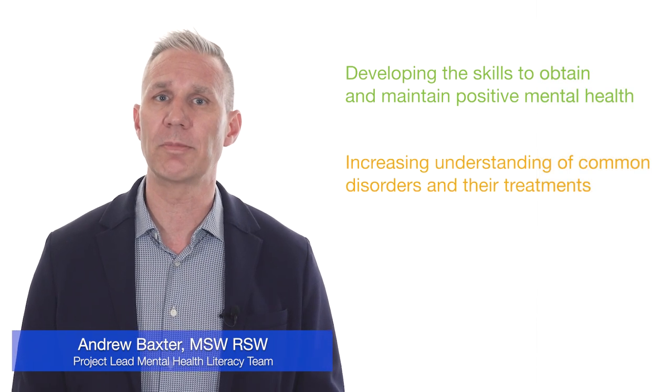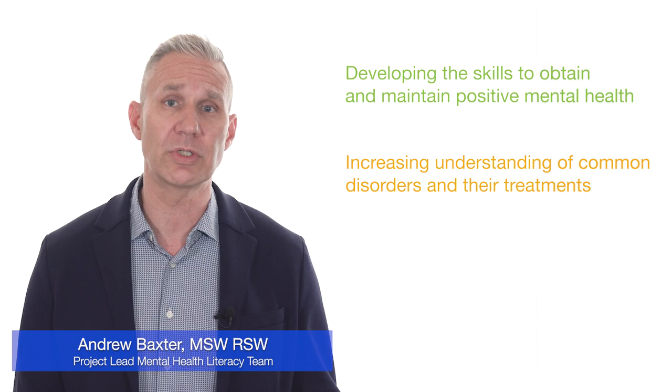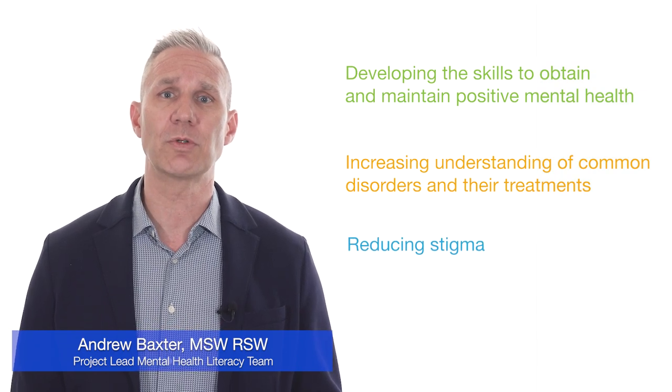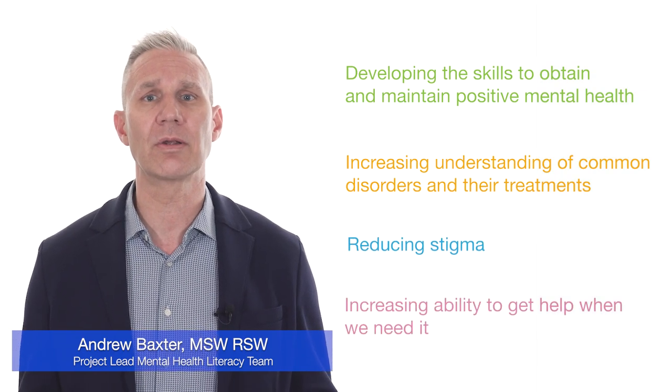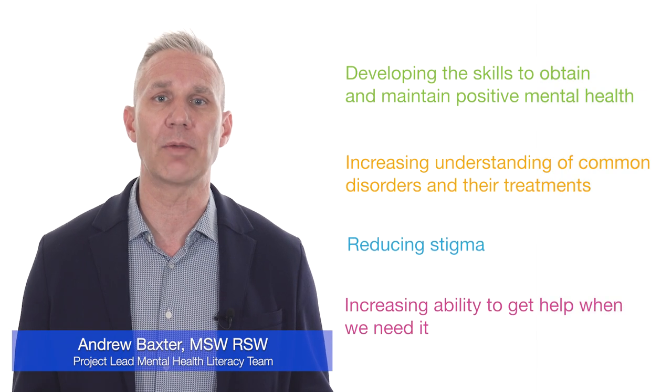Meaningfully addressing the needs of child and youth mental health across Canada is a complex challenge. Developing good mental health literacy is a vital step. Mental health literacy is a part of overall health literacy and has four interrelated components: developing the skills to obtain and maintain positive mental health, increasing understanding of common disorders and their treatments, reducing stigma towards mental illness, and increasing our ability to get help when we need it.